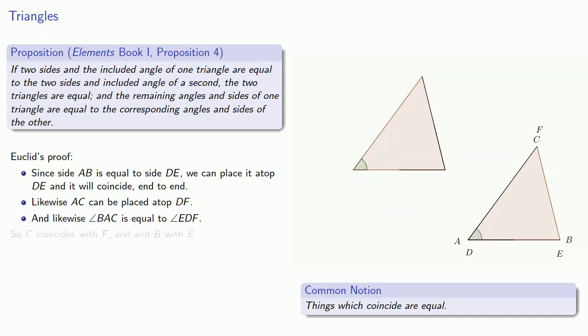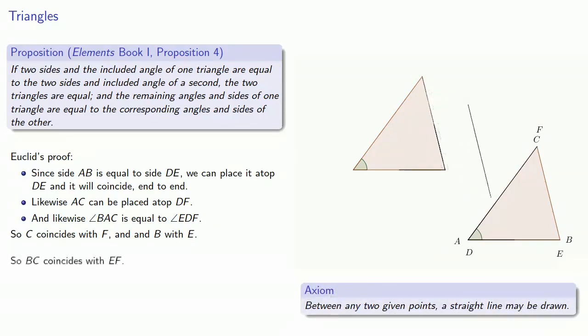And that means the endpoint C coincides with F, and the endpoint B with E. But, Axiom 1, between any two points a straight line may be drawn, BC coincides with EF, because they're straight lines between the same points. Since BC coincides with EF, and AB with DE, that also means angle ABC coincides with angle DEF, and likewise, the angle BCA has to coincide with the angle EFD, they must also be equal.